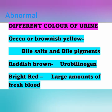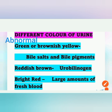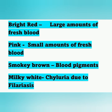Now some abnormal urine colors: green or brownish-yellow urine indicates bile salt and bile pigment; reddish-brown indicates urobilinogen; bright red indicates a large amount of fresh blood; pink indicates a small amount of fresh blood; smoky brown indicates blood pigments; and milky white color, known as chyluria, is seen in cases of filariasis.